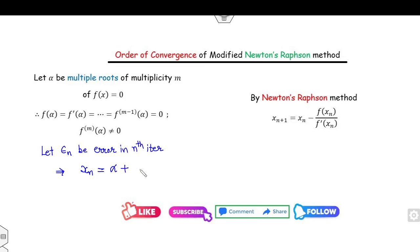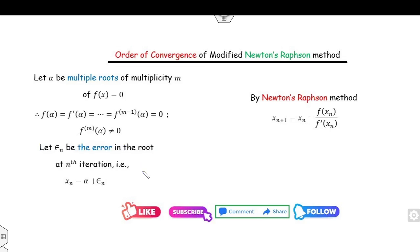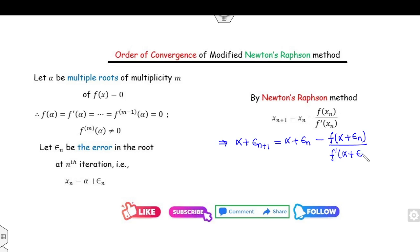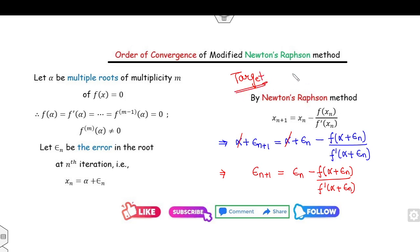Let epsilon_n be the error in the n-th iteration — that means if you obtain the n-th iterate, the original root is alpha and the error is epsilon_n. I can substitute this value into the expression: alpha + epsilon_{n+1} = alpha + epsilon_n - f(alpha + epsilon_n) / f'(alpha + epsilon_n). Alpha cancels out, giving epsilon_{n+1} = -f(alpha + epsilon_n) / f'(alpha + epsilon_n). The target is to find f(alpha + epsilon_n) and f'(alpha + epsilon_n).